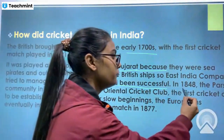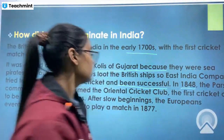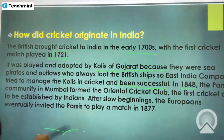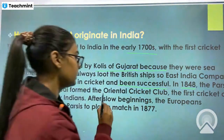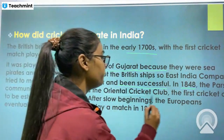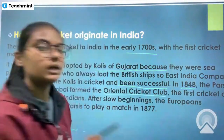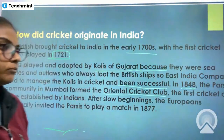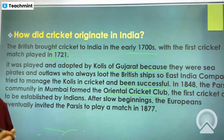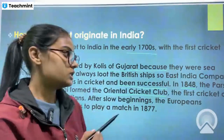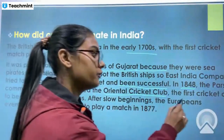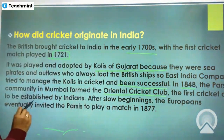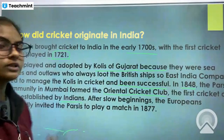In 1848, the Parsee community in Mumbai formed the Oriental Cricket Club — the first cricket club to be established by Indians.